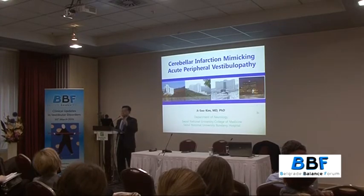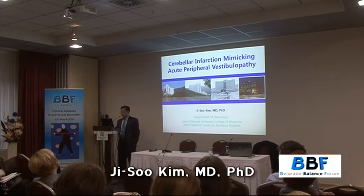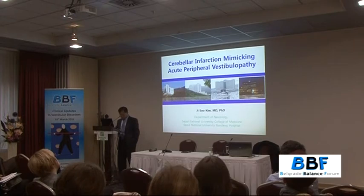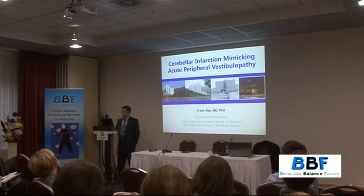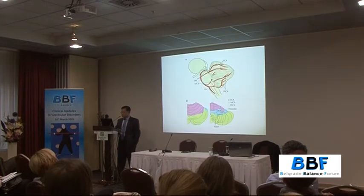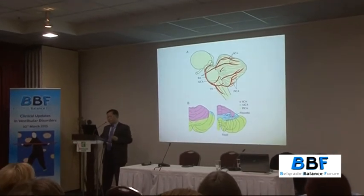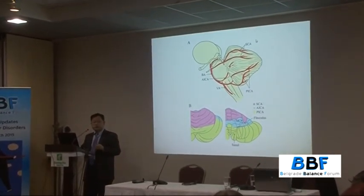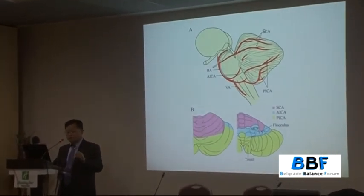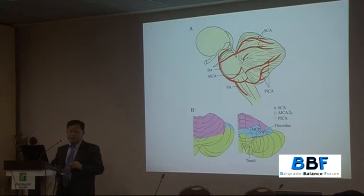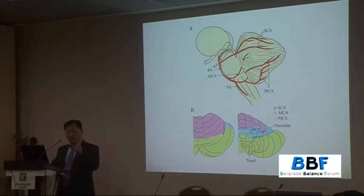In this section, I'm going to present some cases of cerebellum infarctions that mimicked acute peripheral vestibulopathy. As you know, the cerebellum is supplied by three arteries. The posterior inferior cerebellar artery supplies most of the caudal cerebellum, and the superior cerebellar artery supplies the rostral portion. The anterior inferior cerebellar artery supplies the flocculus, the middle cerebellar peduncle, the inner ear, and the anterior caudal cerebellum.